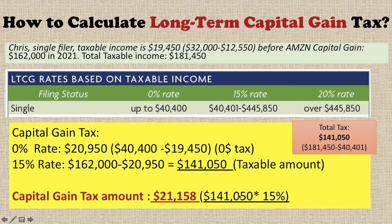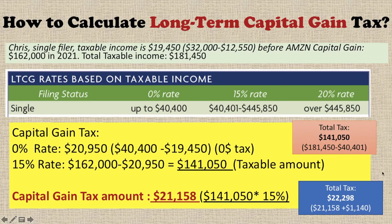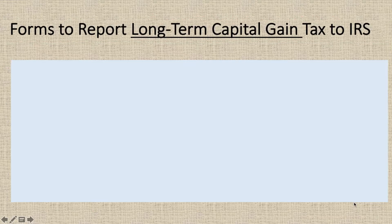So you can calculate the total long-term capital gain tax, which comes to $21,158. If you add the income tax from his salary, the total tax owed is $22,298.